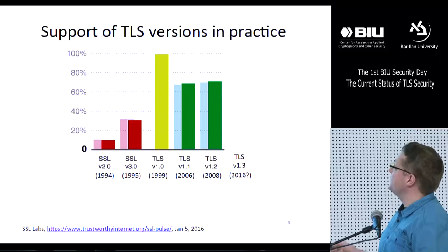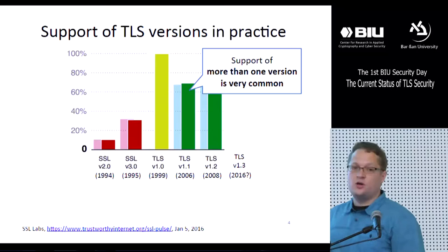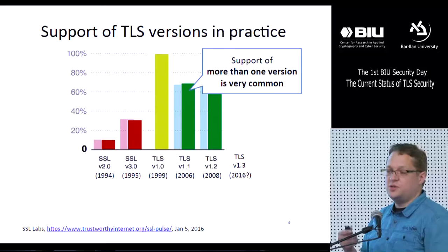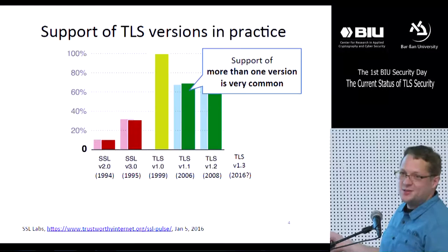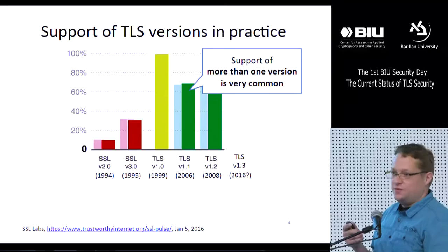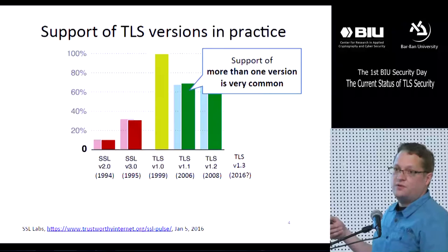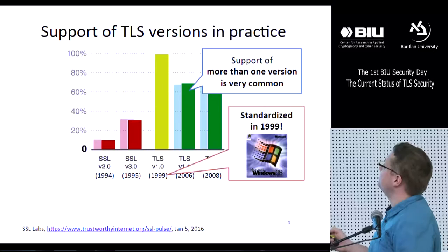There are two points I'd like to make. First, it's very common for a web server to support more than one version. A typical well-configured web server that wants to maximize compatibility with clients would offer TLS versions 1.2, 1.1, and 1.0. And once TLS 1.3 is finalized, it will very likely be offered in parallel with all these older versions.